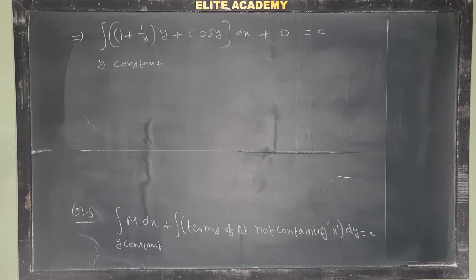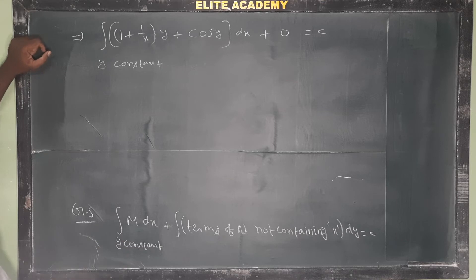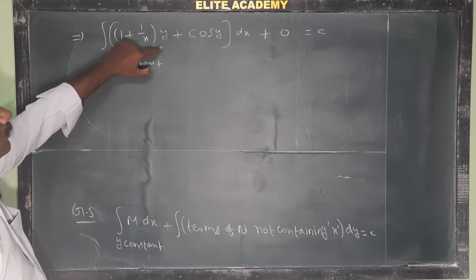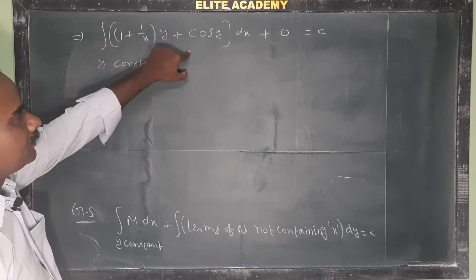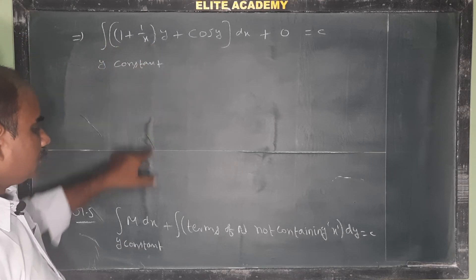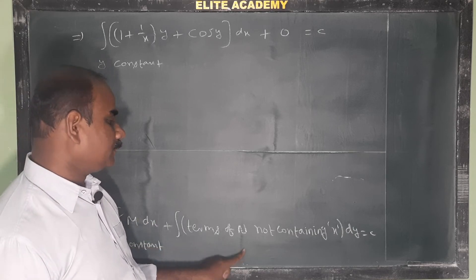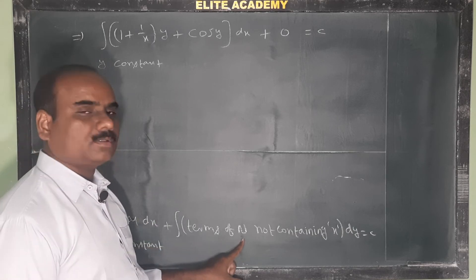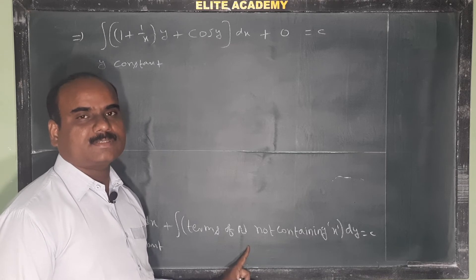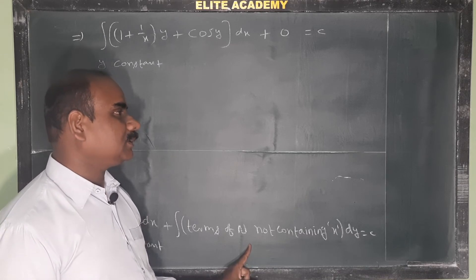The general solution is: integral of M dx = integral of [y(1 + 1/x) + cos y] dx (y constant), plus integral of terms of N not containing x dy. From N = x + log x - x·sin y, there are no terms independent of x.